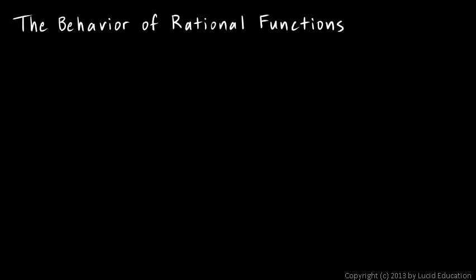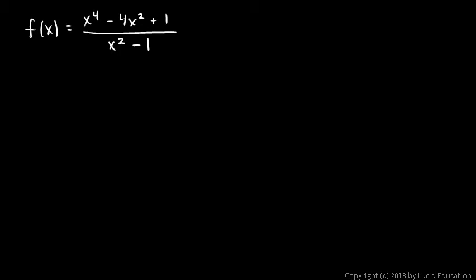Okay, we're still on this topic of the behavior of rational functions. In this next example, we're going to talk about asymptotes that are not linear. We've looked at vertical asymptotes, horizontal asymptotes, and slant asymptotes, all of which are lines. But the asymptote doesn't have to be a line. We can have a graph that is asymptotic to a nonlinear function, and that's what we see here: x to the fourth minus 4x squared plus 1 over x squared minus 1.